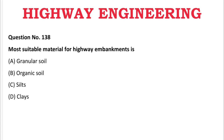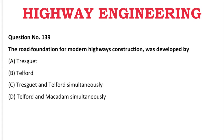Next question: The most suitable material for highway embankment is — A: granular soil, B: organic soil, C: silt, D: clays. The correct answer is A, granular soil.